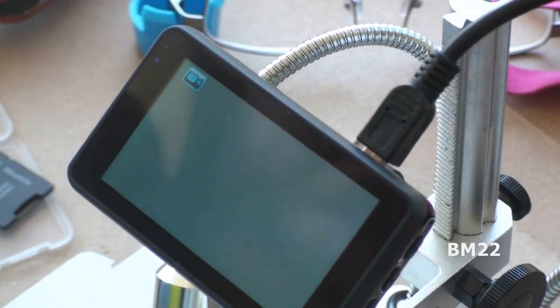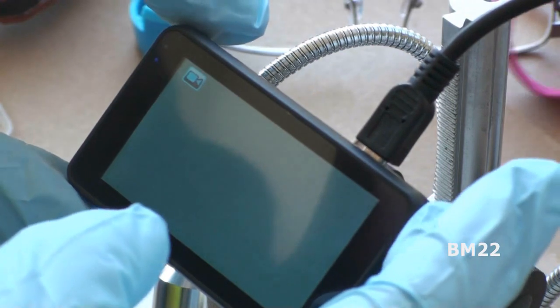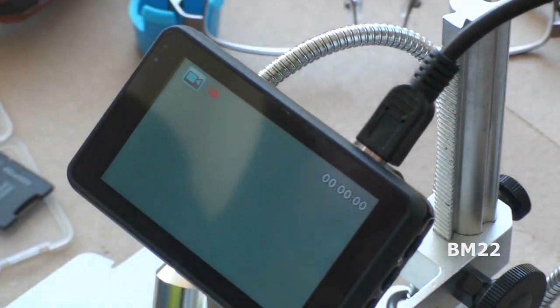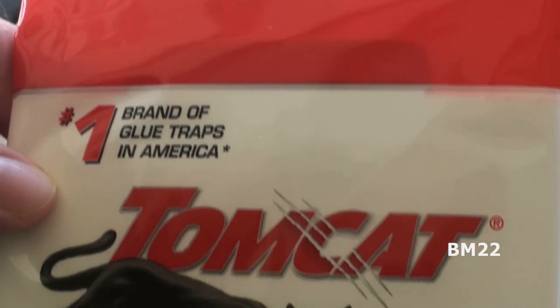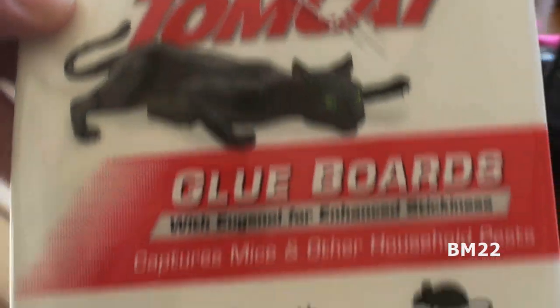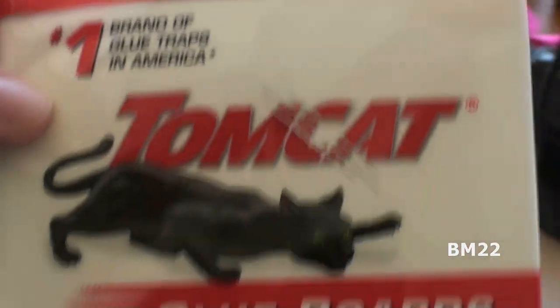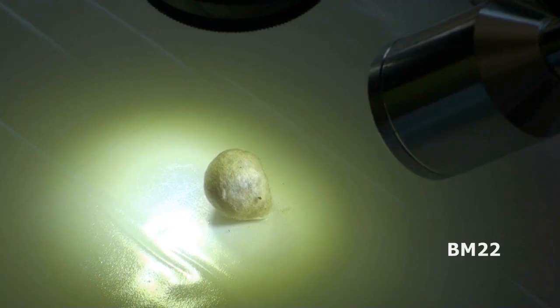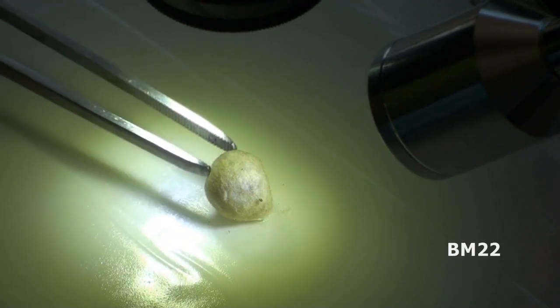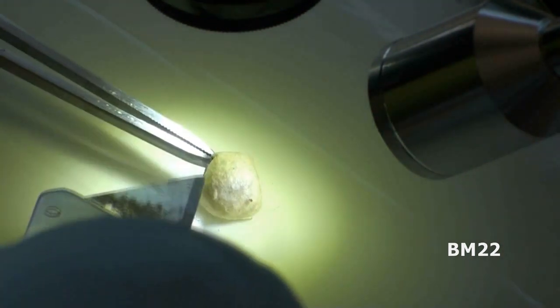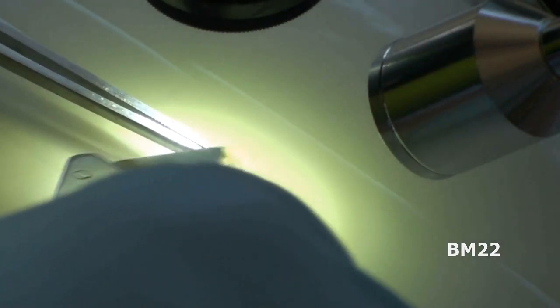And one other quick thing. If you remember the last time we opened an egg case, spider babies came pouring out and we had to torch them. This time we're going to open the egg cases on one of those glue boards, one of those mouse catching glue boards. This glue board is from Tomcat. So we put the glue board under the microscope, we put the egg case on the glue board and here we go.